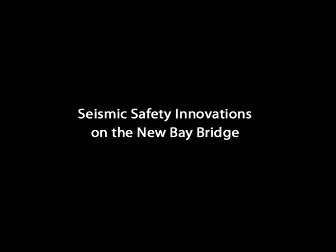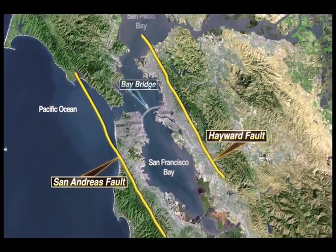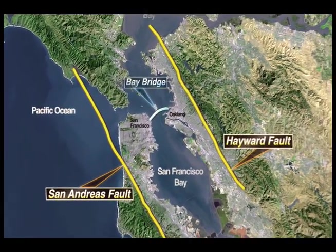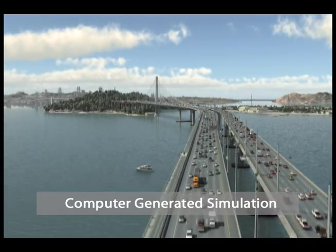The animation that you're about to look at shows specific responses of seismic innovations on the new Bay Bridge. The animation is only done to show you what the potential response could be for these areas. As we come in, you see that the two major fault lines are the Hayward Fault and the San Andreas Fault, located on either end of the Bay Bridge.